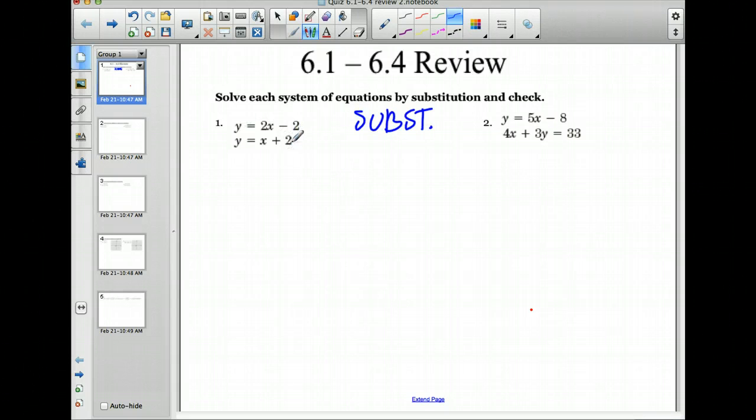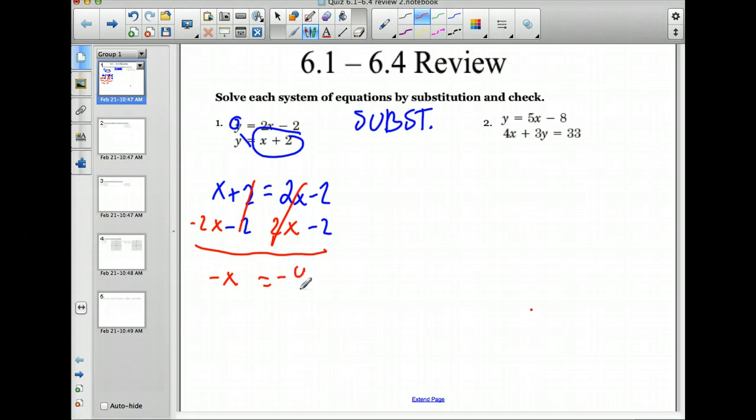All right, so what we would do with this, we're just going to replace this y value with that equation. So now we have x plus 2 equals 2x minus 2. And now we just solve it. So we're going to subtract 2 from both sides and also minus a 2x from both sides. So that cancels the negative 2x there. That cancels the 2 there. We have x minus 2x is negative x equals negative 4. So that means x equals 4.